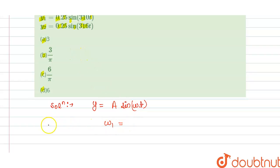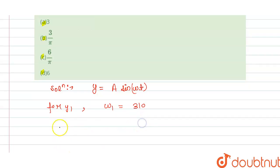For y1 we have omega 1 is 310, and for y2 displacement we have omega 2 is 316.